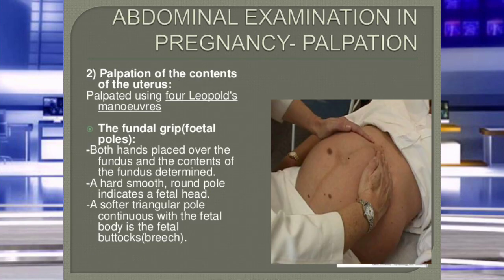For palpation of the uterine contents, we perform four maneuvers known as Leopold's maneuvers. The first is the fundal grip: place both hands at the fundus and check for hard or soft muscle. If a hard structure is felt, it indicates the head or cephalic position of the baby. If a soft, triangular structure is felt, it indicates the buttocks. The fundal grip helps identify whether the head or buttocks are at the fundus.